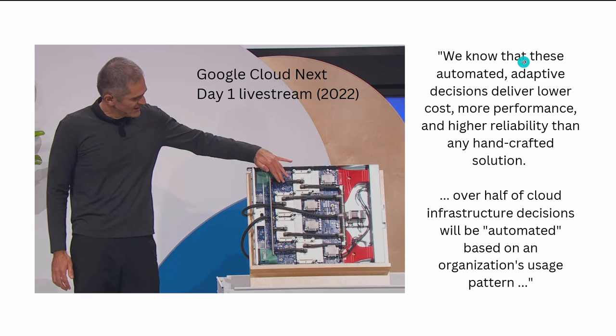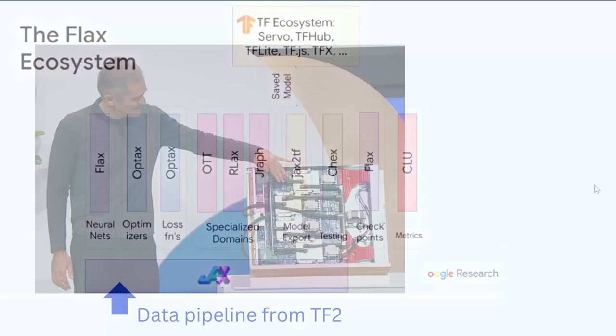And what they say, we know that these automated adaptive decisions deliver lower cost, more performance, higher reliability. Yeah, if somebody knows how to tune and optimize a cloud infrastructure from Google, I hope it is Google itself. And they predict that over half of the cloud infrastructure decisions will be automated based on an organization's usage pattern. So welcome to AI.